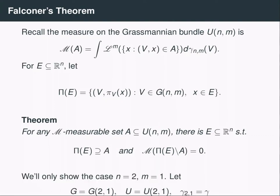The full result of Falconer's theorem is a bit difficult to prove. However, what we'll show is just the planar case: we're going to work in R2 and consider projections into lines, and the full proof is actually very similar to this case. For shorthand, we're going to write G for the Grassmannian, U for the Grassmannian bundle, and gamma for the Grassmannian measure.